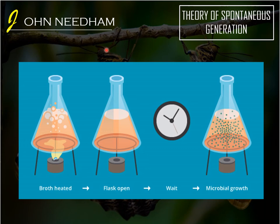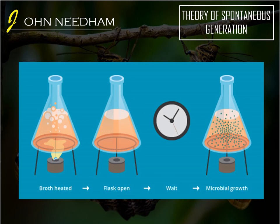In 1745, John Needham also made a test to check the validity of spontaneous generation. Remember that during that time, people already believed that boiling could kill microorganisms. That's why in his experiment, as you can see in the picture, he boiled the chicken broth in a container and left it. Days later, microorganisms still grew on the surface of the chicken broth. He presented his result as evidence that supported the theory of spontaneous generation, because he stated that there was no other source of life other than the chicken broth.